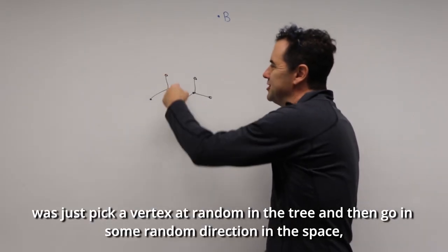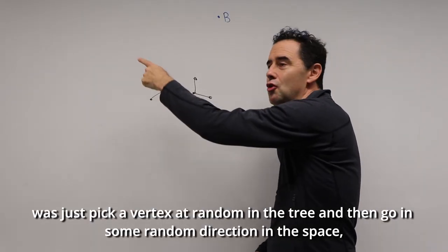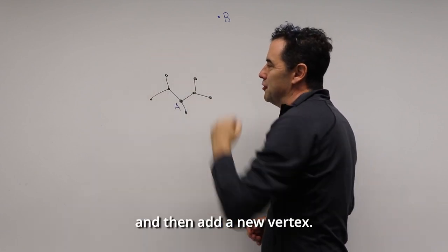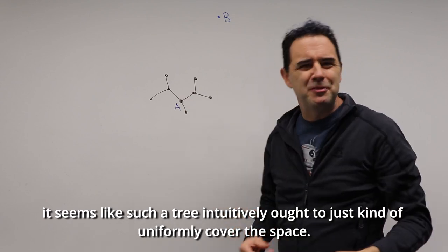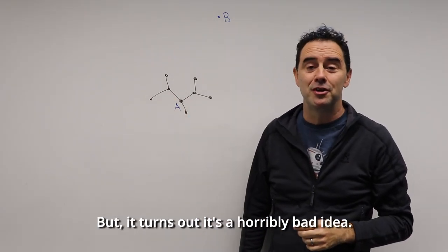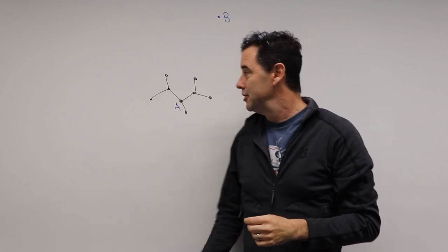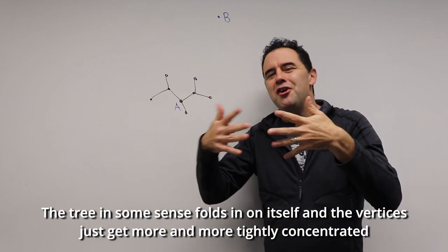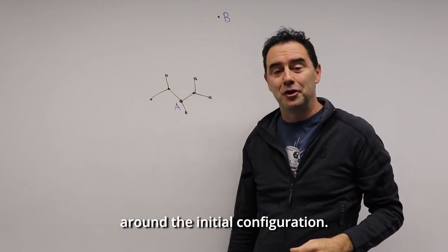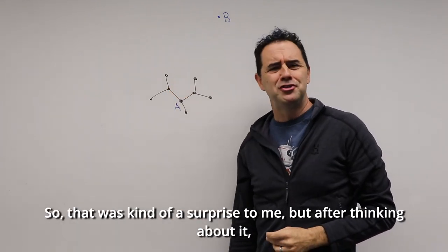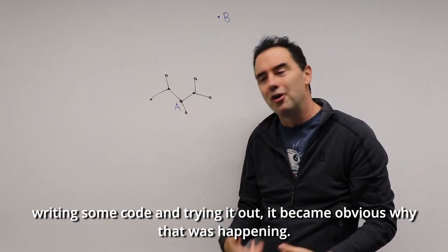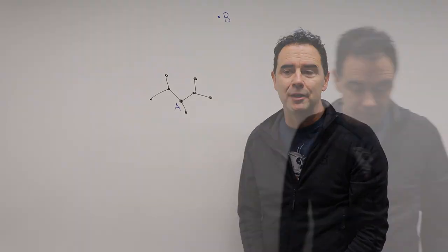One of the ideas I had that seemed very reasonable — but turned out to be a bad idea — was to just pick a vertex at random in the tree and then go in some random direction in the space and add a new vertex. If you do this over and over again, it intuitively seems like the tree ought to uniformly cover the space, but it's a horribly bad idea. The tree folds in on itself and the vertices get more and more tightly concentrated around the initial configuration.